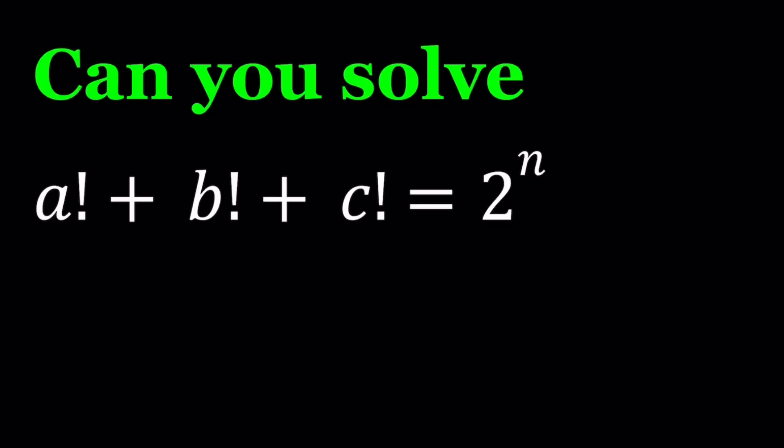Let's look at this problem from an inequality perspective. We can assume without loss of generality that a is less than or equal to b, and b is less than or equal to c. This doesn't matter because a, b, c are interchangeable — we can assume one is less than or equal to the others.